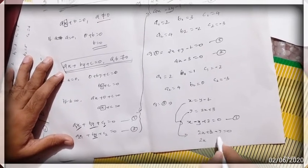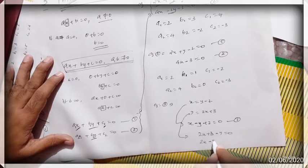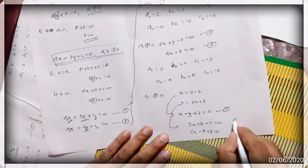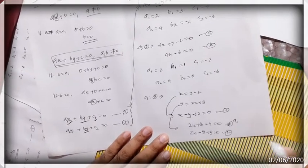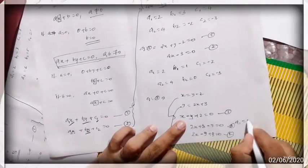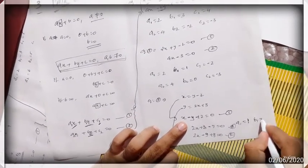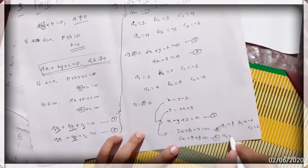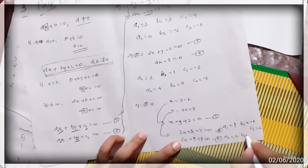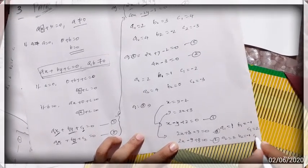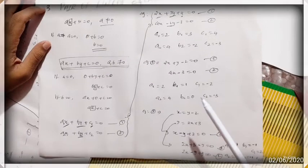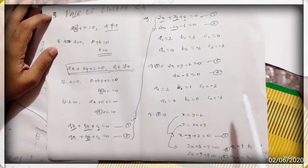For the second equation y = 2x + 3, bring y to the other side: 2x − y + 3 = 0. So a₁ = 1, b₁ = −1, c₁ = 2, a₂ = 2, b₂ = −1, and c₂ = 3. Now you should practice some questions to find a₁, a₂, b₁, b₂, c₁, and c₂.